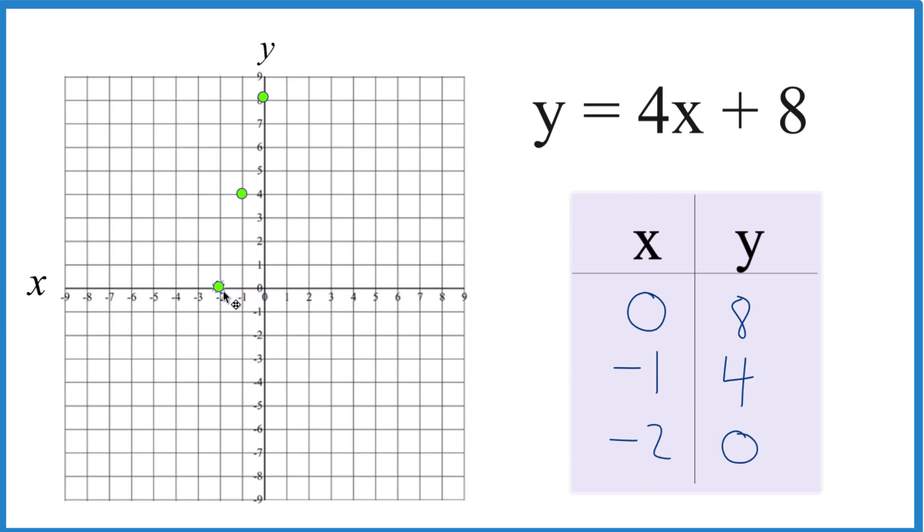x is negative 2, y is 0. So you see how that lines up. Let's put a line through that.